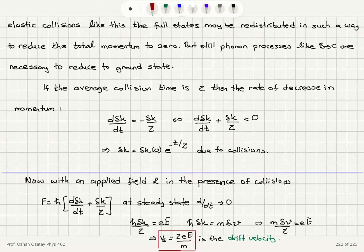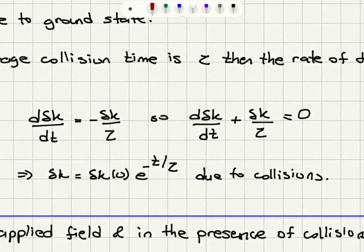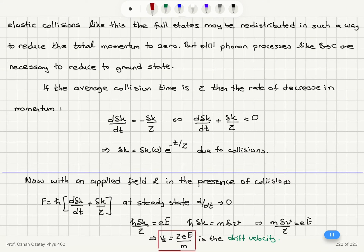If the average collision time is tau, the rate of decrease in momentum is d(delta-k)/dt. In average time tau we have one collision causing a change in momentum, so d(delta-k)/dt plus delta-k over tau equals zero. Therefore, delta-k equals delta-k₀ times e^(−t/tau) due to collisions. After turning off the force, the extra momentum decays exponentially in time due to collisions.